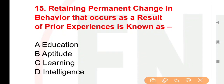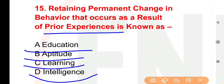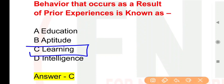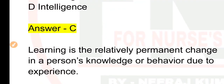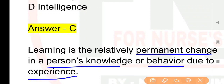Next question: Retaining permanent change in behavior that occurs as a result of prior experience is known as — options: Education, Aptitude, Learning, Intelligence. The right answer is option C — it is Learning. Learning is the relatively permanent change in a person's knowledge or behavior due to experience.